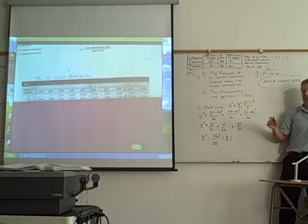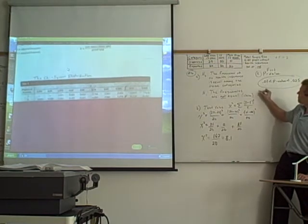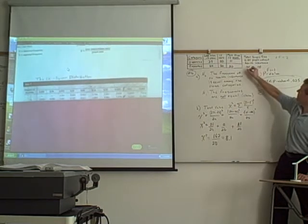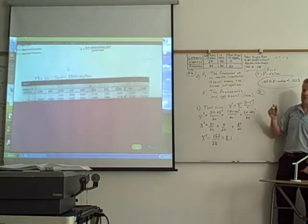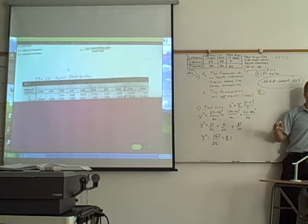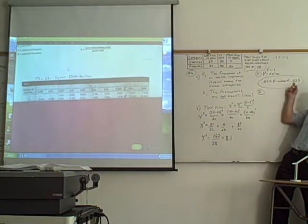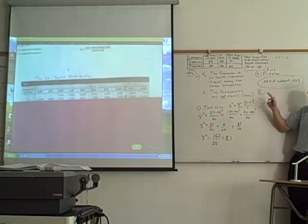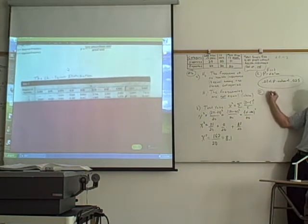Now, if the p-value is less than alpha, we would reject the null. Alpha is 0.05. So would our p-value be less than alpha? Yes. It's less than 0.025, so it has to be less than alpha. So since the p-value is less than alpha, we're going to reject the null.